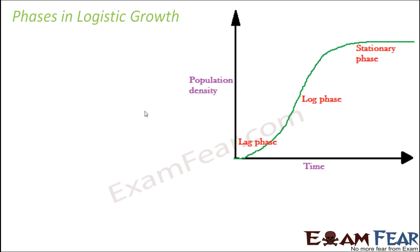When we talk about logistic growth, the population increases with time but reaches a stage beyond which it doesn't increase any further. This plateau point is termed the carrying capacity. So the point where the population stops increasing and remains steady is the carrying capacity, meaning the habitat has reached its limit beyond which the population cannot grow.